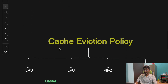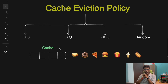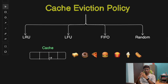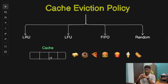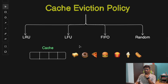Now let's talk about cache eviction policies. When a cache reaches its maximum storage capacity — say the cache size is 4 — it needs a strategy to decide which data to remove so that new items can be accommodated. Cache storage is limited; we cannot have unlimited cache storage. The common cache eviction policies are: Least Recently Used (LRU), Least Frequently Used (LFU), FIFO (First In First Out), and Random Eviction.